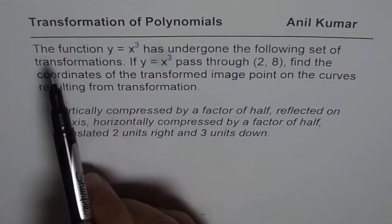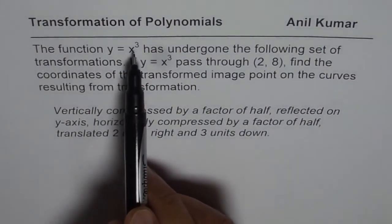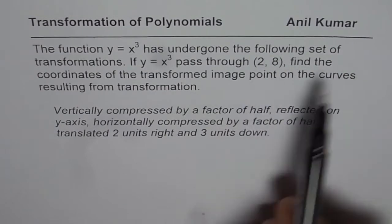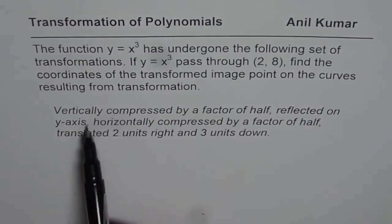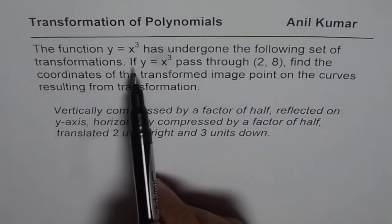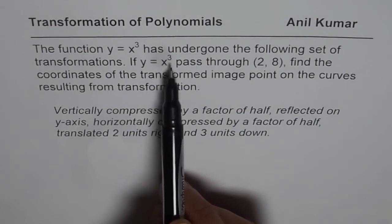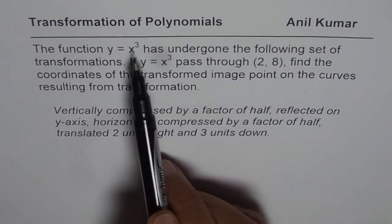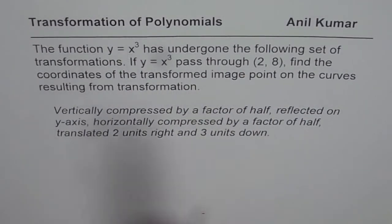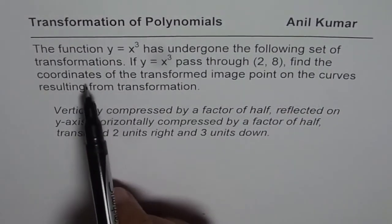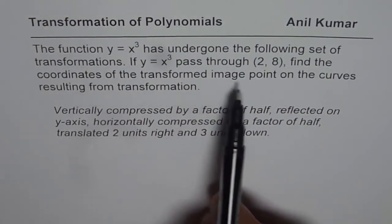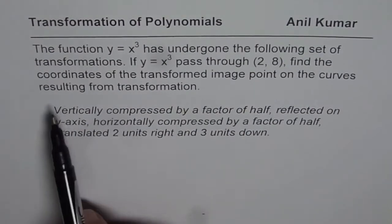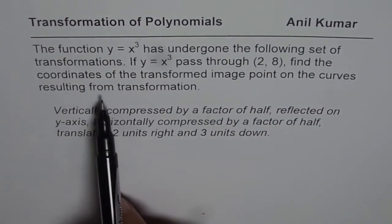The question here is: the function y = x³ has undergone the following set of transformations. If y = x³ passed through (2, 8) — 2 cubed is 8, so that's the point on this function — find the coordinates of the transformed image point on the curves resulting from transformation.